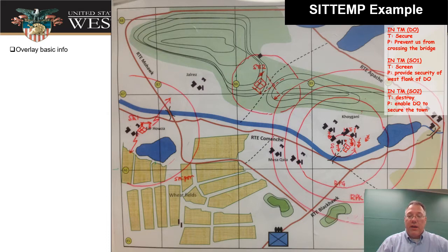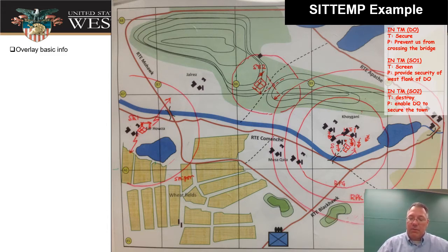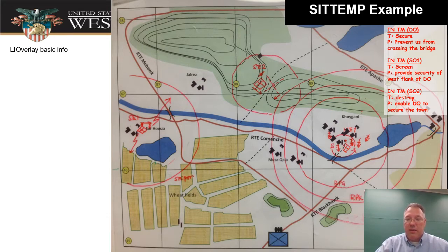This is an overlay. The first thing you got to start out putting on there is your basic overlay info — the unclassified markings and that index info down in the bottom: the date-time group, when it was made, who made it, what it's of, the title, that kind of stuff. Also your north-seeking arrow.